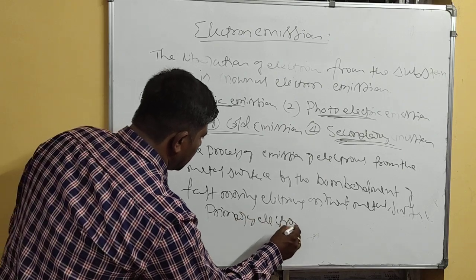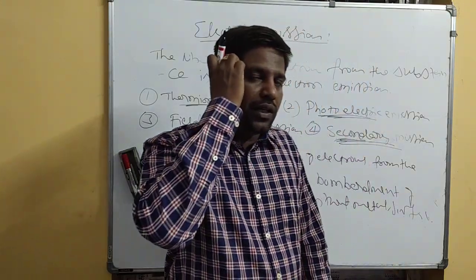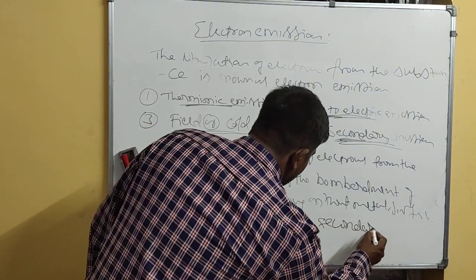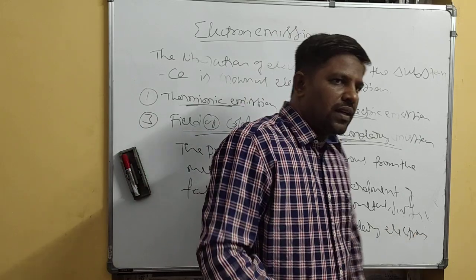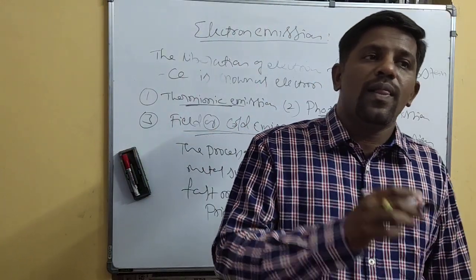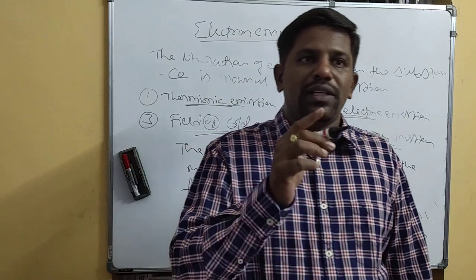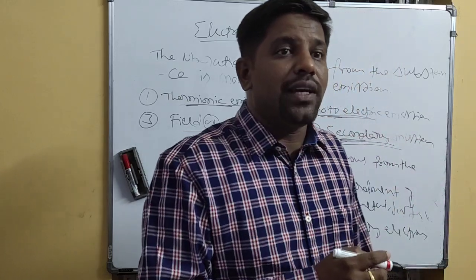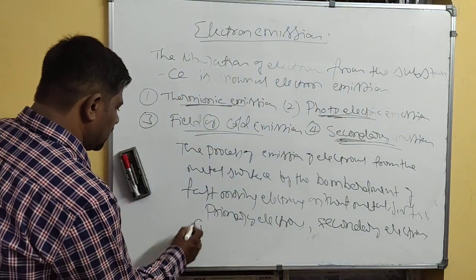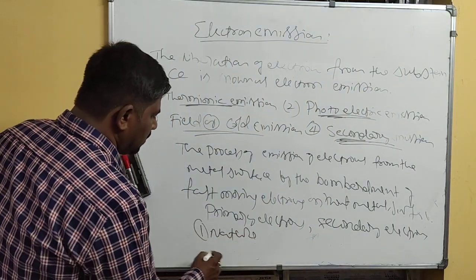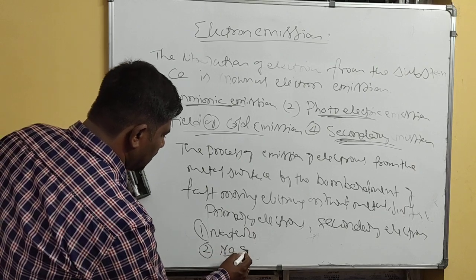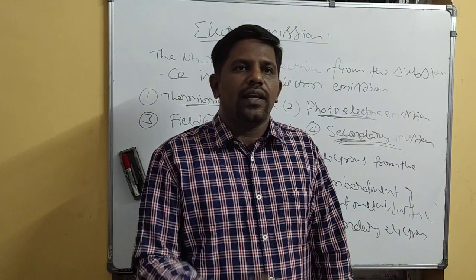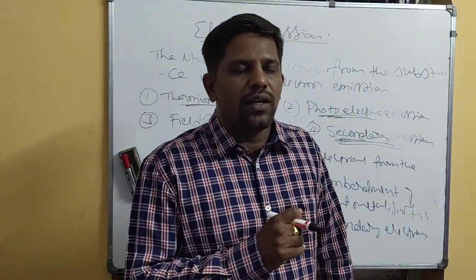The fast-moving electrons that bombard the metal surface are called Primary Electrons, and the electrons ejected from the metal surface by the bombardment of primary electrons are called Secondary Electrons. The number of electrons ejected depends on the nature of the metal surface and the number of primary electrons. This is about the four types of Electron Emission.